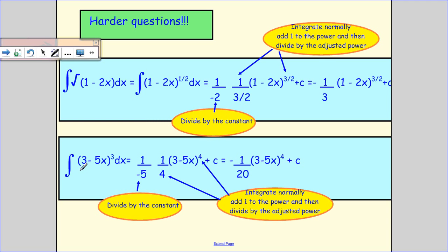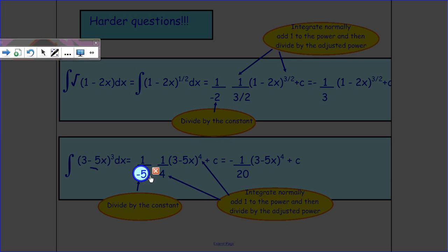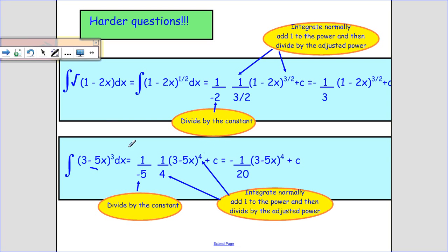OK, so here I've got 3 minus 5x cubed, all cubed. I want to integrate it. So first of all, I divide by the constant in front of the x. I divide by that minus 5. And then I do the normal integration. I add 1 to the power, 3 plus 1 is 4. And then I divide by the adjusted power. So I divide by 4.